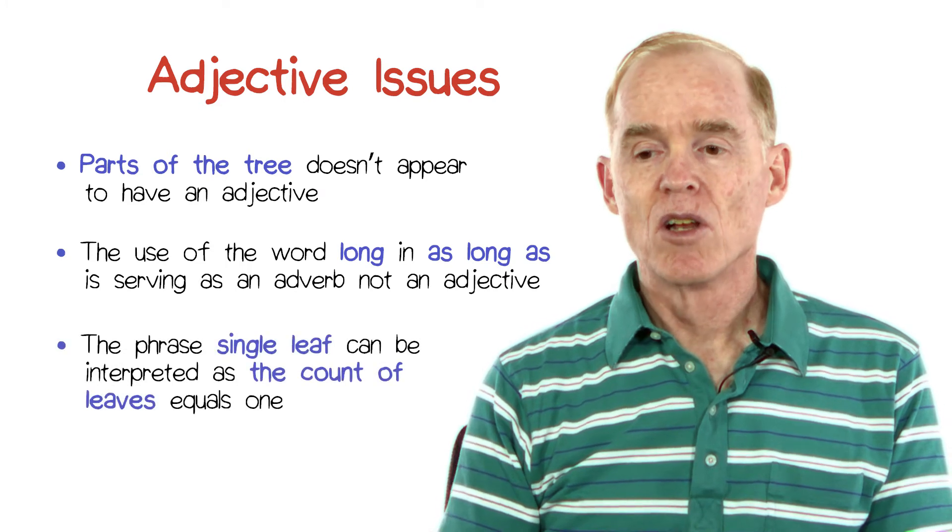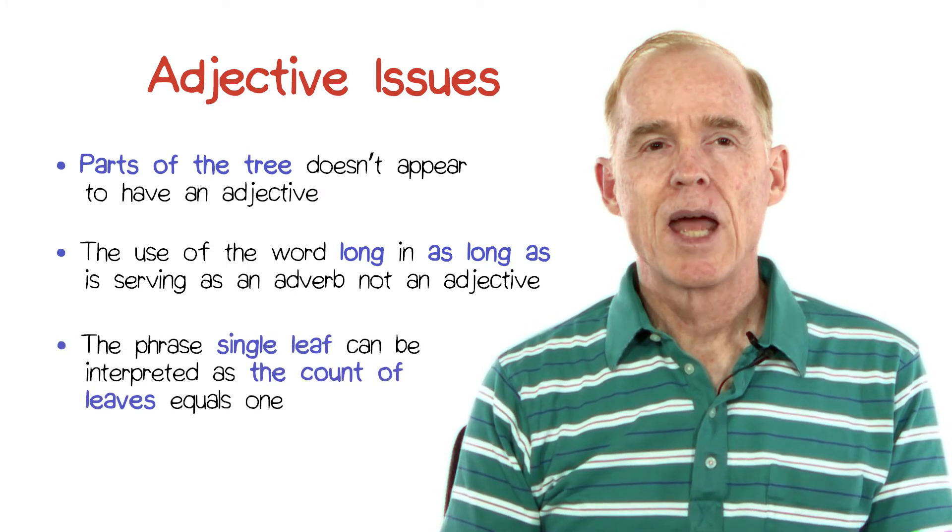The phrase single leaf, if we think about it for a minute, has to do with the count of the leaves. This is one of a potential different number of counts that leaves could have — that is, there's a count attribute that has a value of one, with single meaning one. Similarly, the phrase two subtrees can be interpreted as a count of the number of subtrees in the tree class, having a value of two.